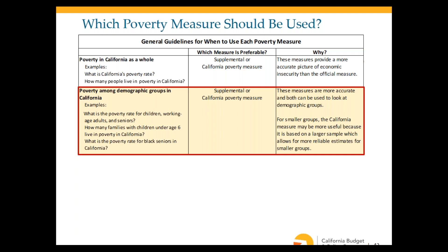To look at poverty among demographic groups in California — such as the child poverty rate or the senior poverty rate — both the supplemental and California measures are recommended. For smaller demographic groups like Black seniors, the California measure may be preferable because it is based on a larger sample size, making the results more reliable.